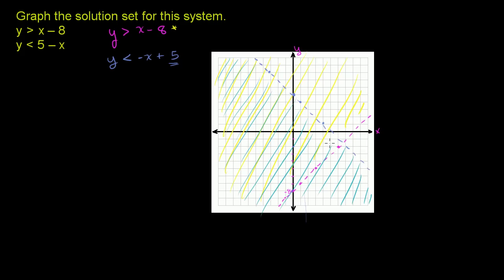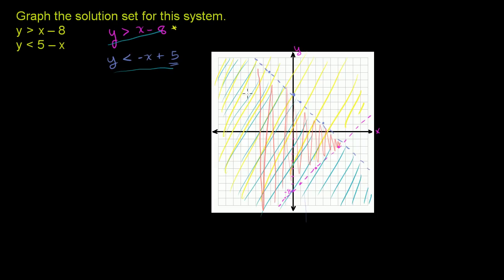Now what we care about is the set of coordinates that satisfy both of these inequalities. To satisfy both, it has to be the overlap of the solution sets. The overlap is where the blue shading overlaps with the yellow — everything above the red line and below the blue line. So all of that area right there is the solution set for this system.